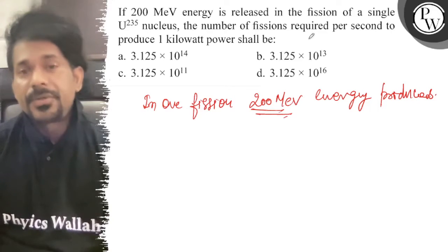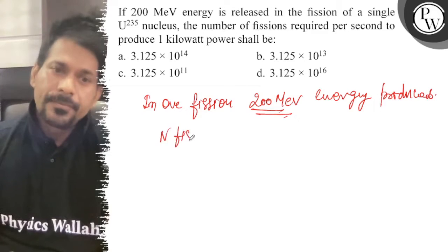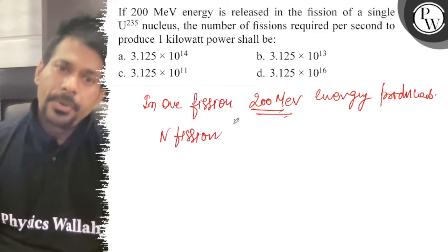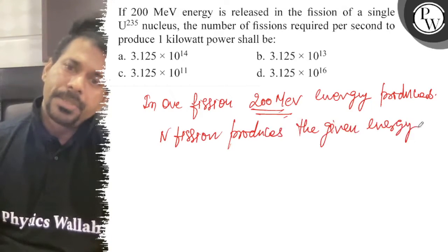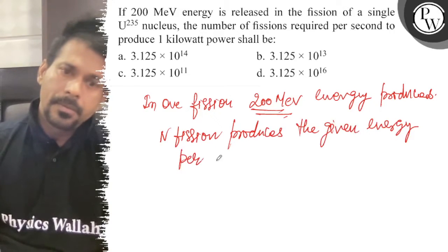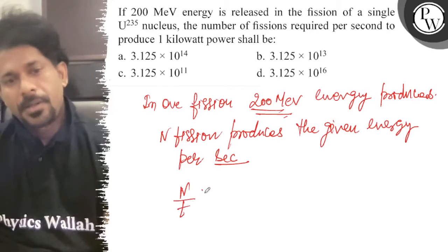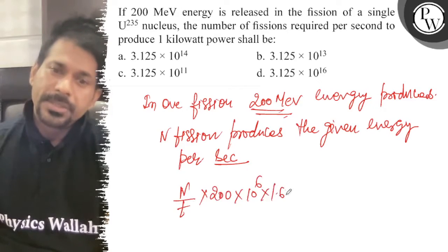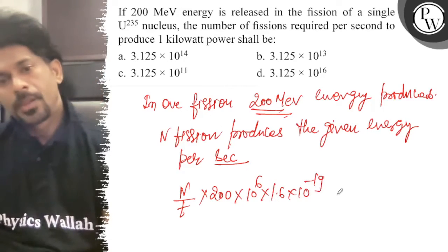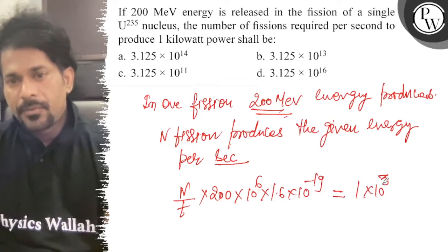Now, the number of fissions required per second to produce — let's say n fissions produce the given energy per second. So, n/t (number of fissions per second) into total energy 200 MeV, which is 10 to the power 6 eV, times 1.6 into 10 to the power minus 19 Joules. So, the power required is 1 kW, which is 10 to the power 3 Watts.